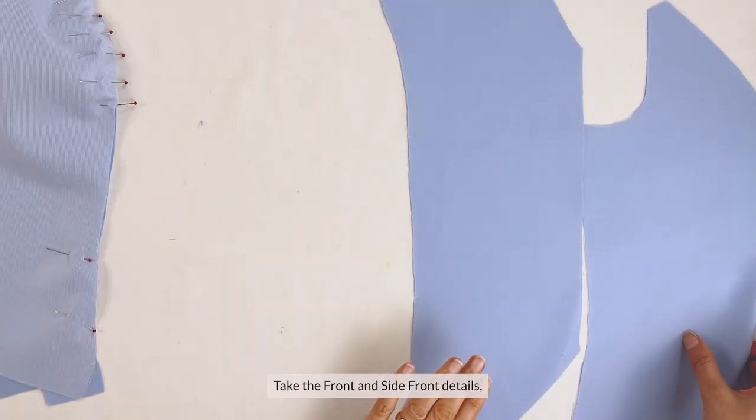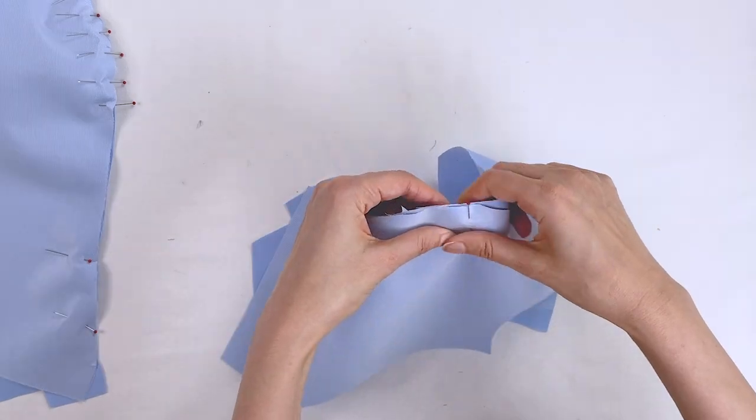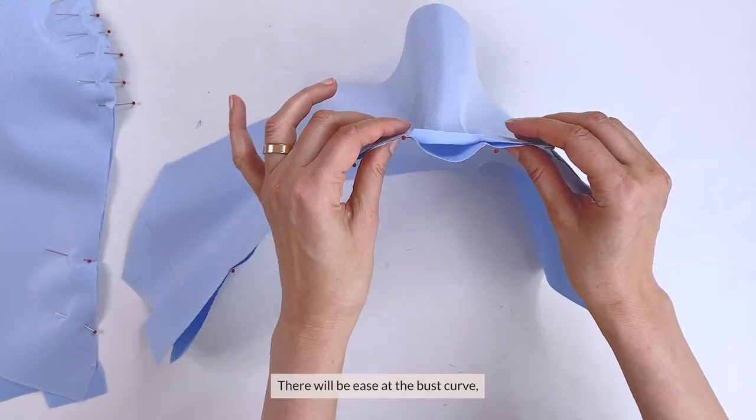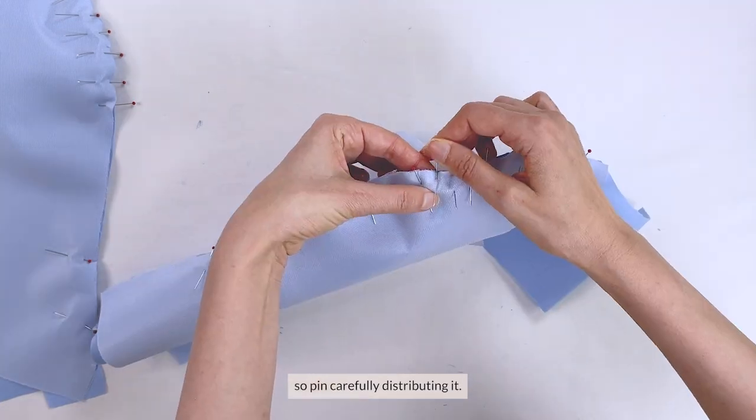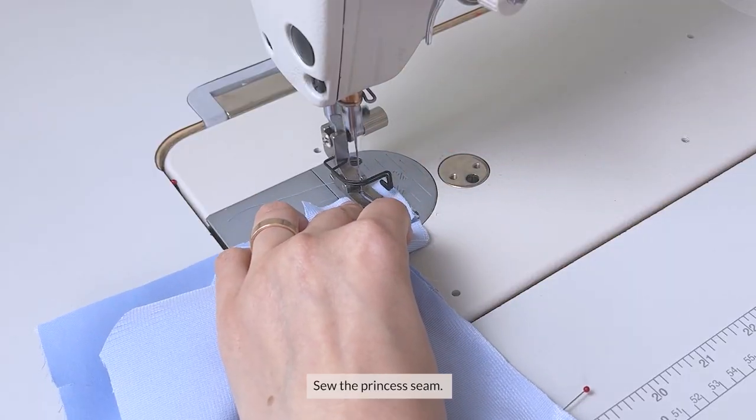Take the front and side front details, and pin the princess seams matching the waist marks, and the marks on the bust. There's going to be ease at the bust curve, so pin carefully distributing it. Ease is needed to create a beautiful bust shape to the waistcoat.